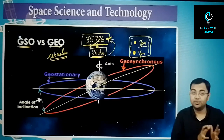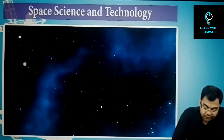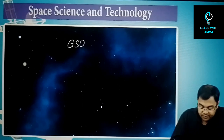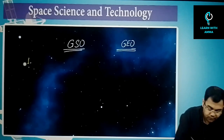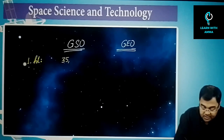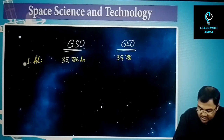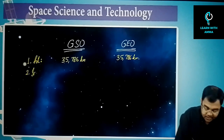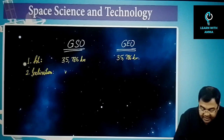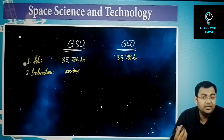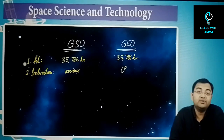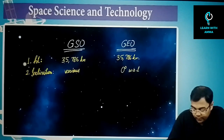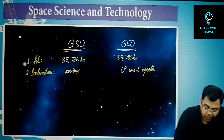To summarize the differences: both geosynchronous and geostationary orbits lie at 35,786 kilometers — same height. On inclination, geosynchronous can have various inclinations (5, 10, 20 degrees), while geostationary always has zero degree inclination with respect to the equator.